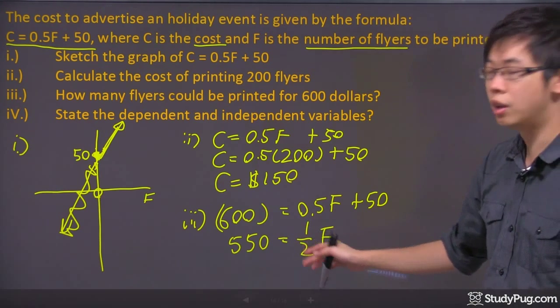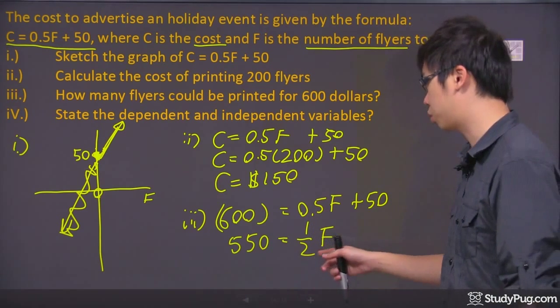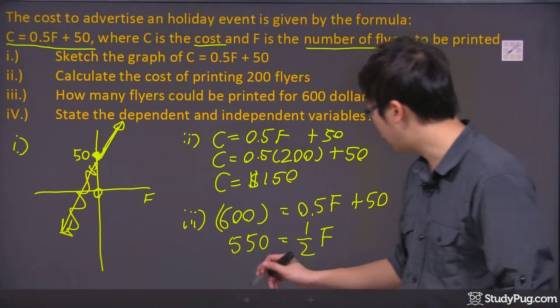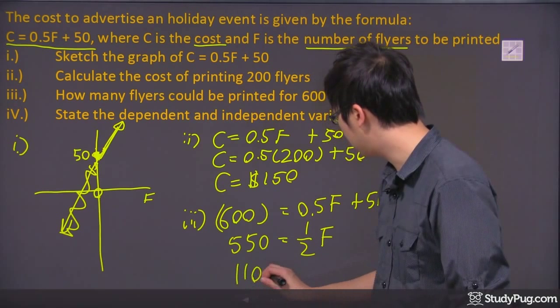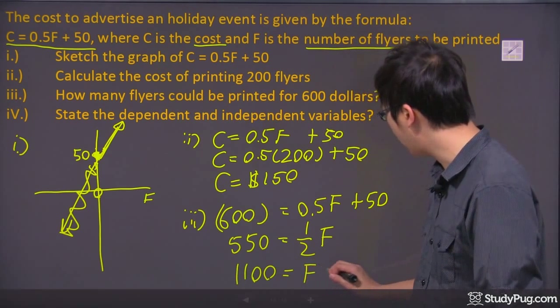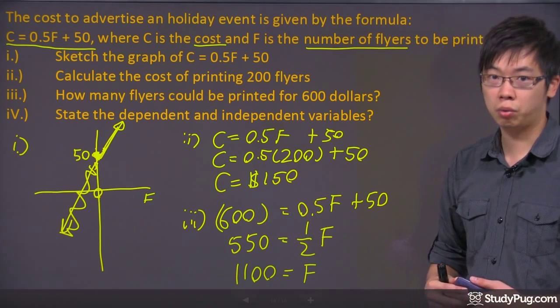So to solve for F, I'm going to either divide the 1 half to both sides or I'm just going to do cross multiplying times 2 to 550. So if I times it by 2, I've got 1,100 flyers will be printed if that's the cost of the whole thing, $600.